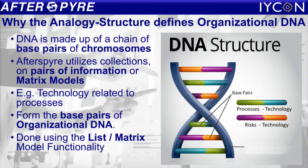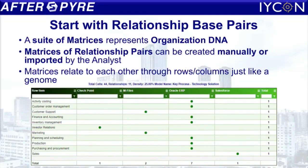Why are we calling this DNA? The analogy is because DNA is made up of base pairs of chromosomes. Within Afterspire, we have matrix models which have base pairs — for example, the relationship between processes and technology, or risks and technology. As you can see here on the matrix model, you have a number of these matrices, so a suite of matrices.